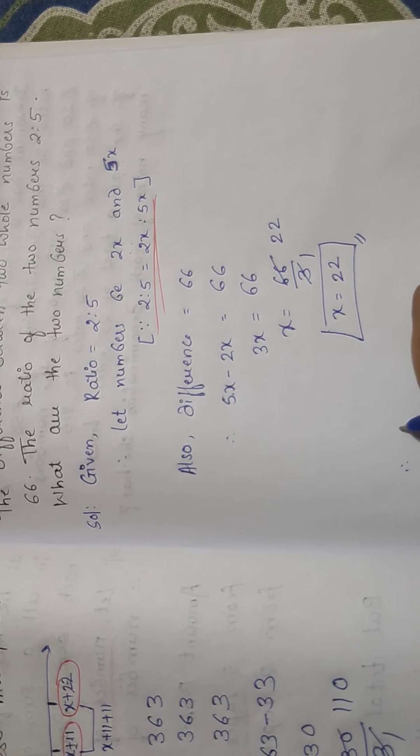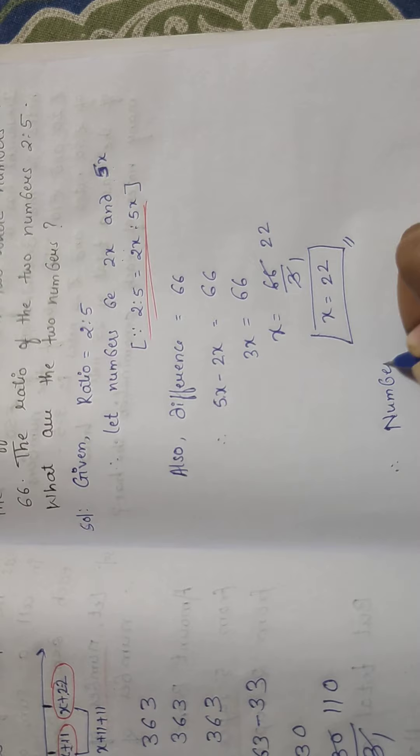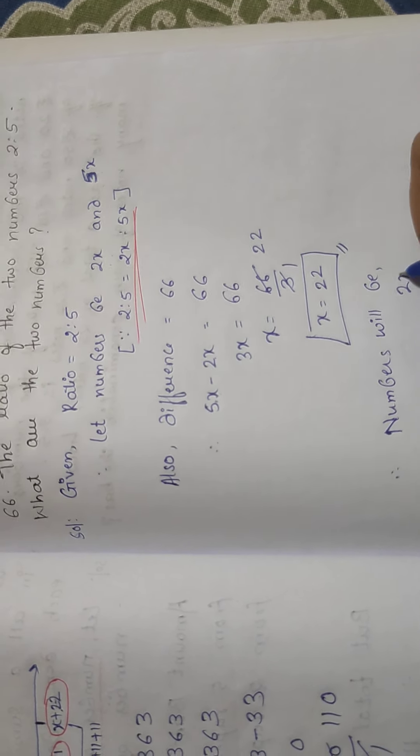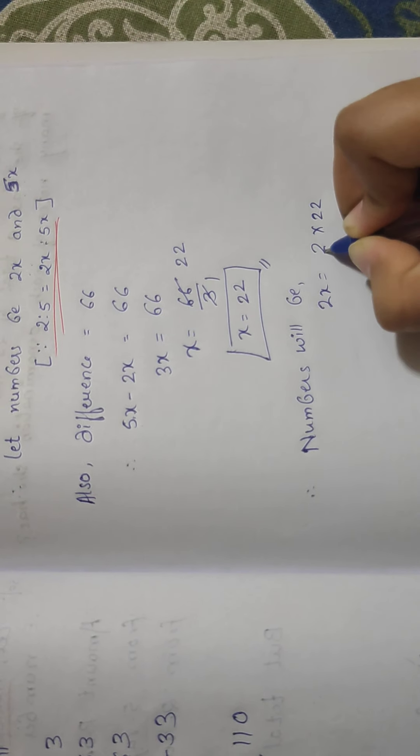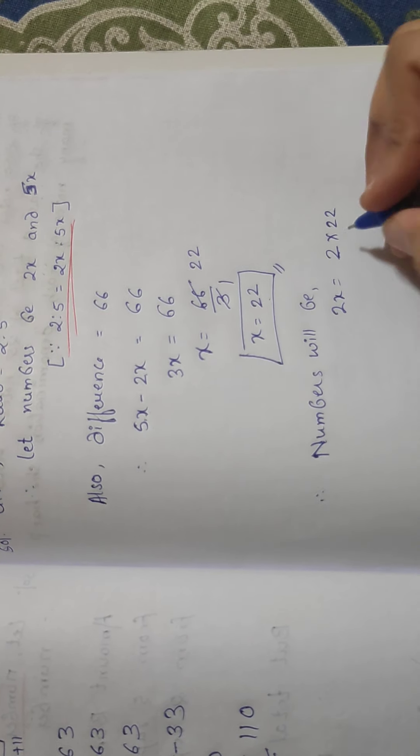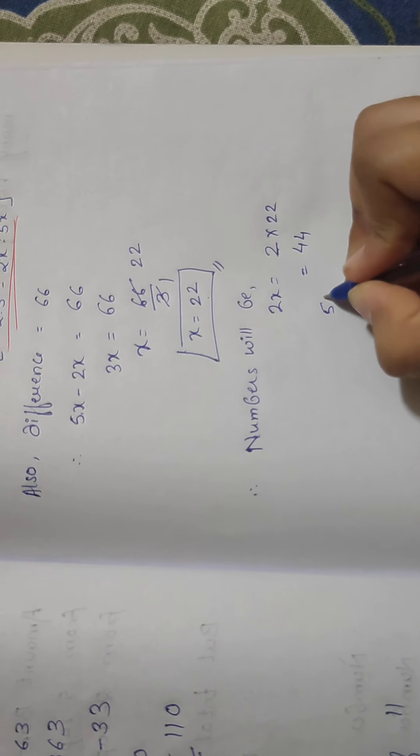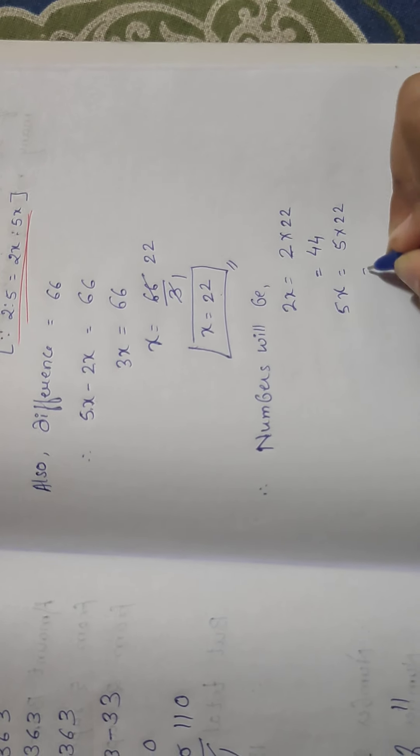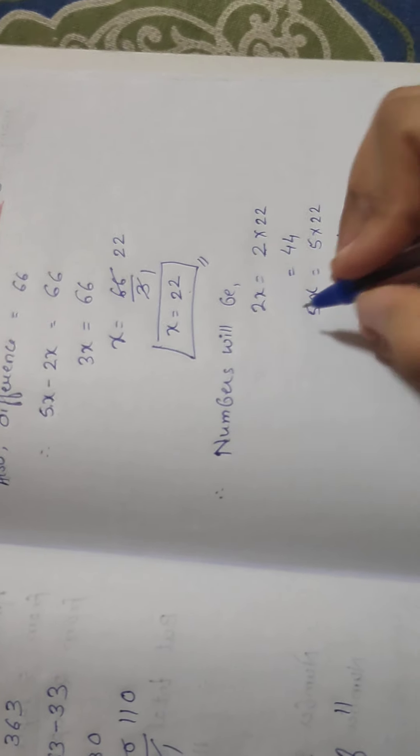So we are getting x as 22, so the common multiple we are having now is 22. So can we find out the numbers? Therefore we can say required numbers will be 2x, so it will be 2 into 22. Instead of x we have to multiply it with 22 because now we are having the value of x, so that is nothing but 44. The another number will be 5x, that is 5 into 22, that is 110.